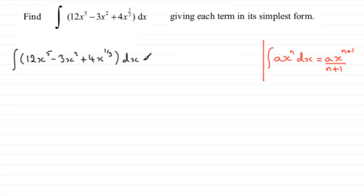For the first term, we get 12 times x to the power of 6, divided by 6. For the next term, we have minus 3 times x to the power of 3, or x cubed, divided by 3.